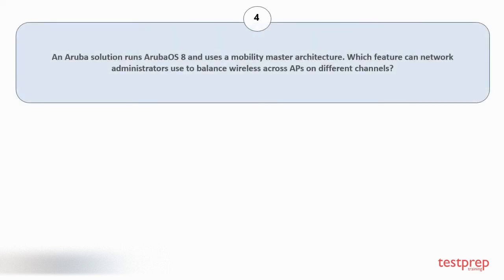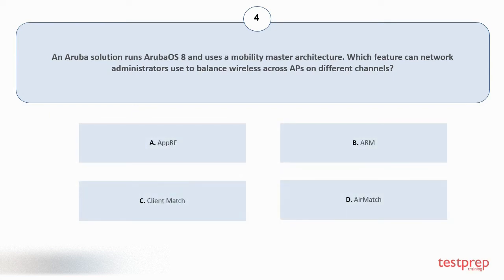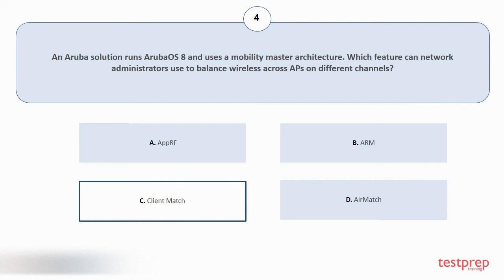Question number 4: An Aruba solution runs ArubaOS 8 and uses a Mobility Master architecture. Which feature can network administrators use to balance wireless clients across APs on different channels? Option A: AppRF. Option B: ARM. Option C: ClientMatch. Option D: AirMatch. The correct answer is option C.